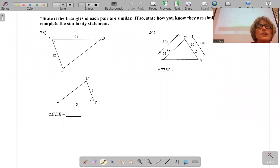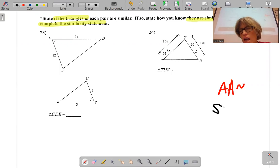So here it says state if the triangles are similar. If so, how are they similar? Your three shortcuts to similarity are if two angles are congruent, that is angle angle similarity. Side angle side similarity means I have one pair of congruent angles and then side ratios equal. And then your last one is if I have three sets of sides where the ratios are equal.